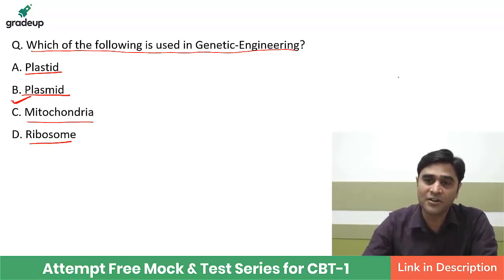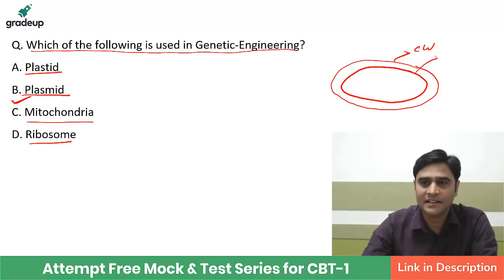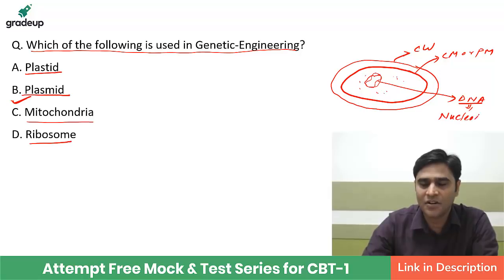What is Plasmid? To understand plasmids, you have to study the structure of bacteria. Bacteria has a cell wall and a cell membrane or plasma membrane. In bacteria, DNA is present in the cytoplasm — it is not covered by a membrane. DNA is directly present in cytoplasm, so this DNA is called nucleoid, not nucleus.